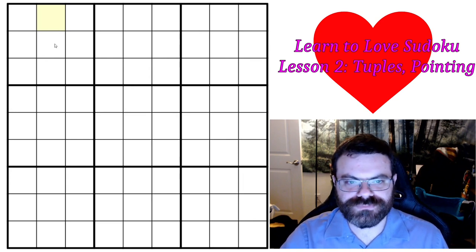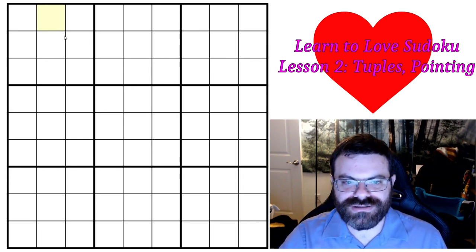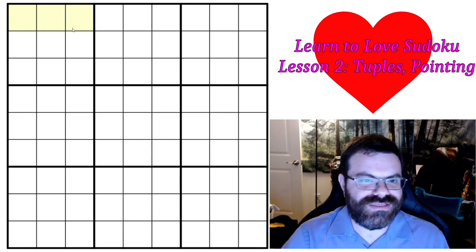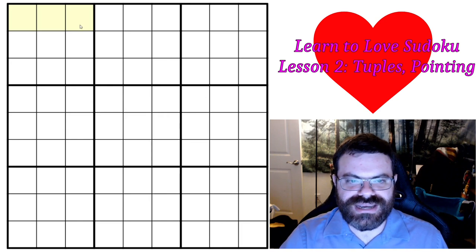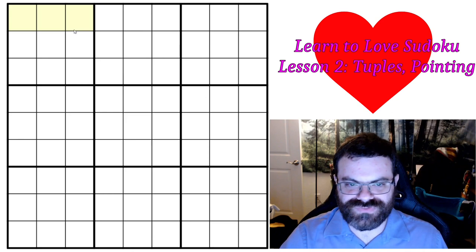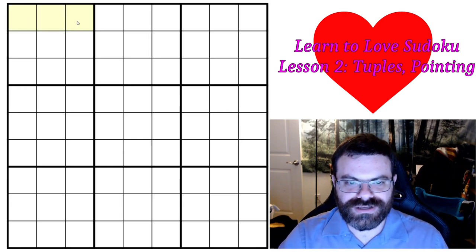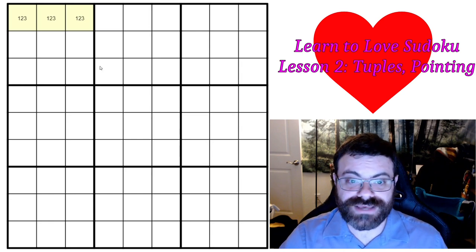So when cells in the same group are reduced to the same number of candidates as the number of cells, then the consequence is that none of the other cells in that group can be any of those values. I wanted to give the definition of a tuple. So for example, if I reduce these three cells to just 1, 2, 3 in some way, then that means we can't put a 1, 2, or 3 anywhere else in that row.